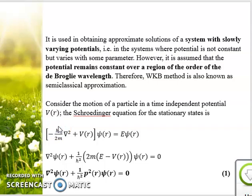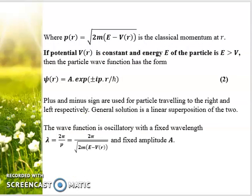We consider the motion of a particle in a time-independent potential V(r). The Schrödinger equation for the stationary state will be: minus ℏ² ∇²/(2m) + V(r) operating on ψ(r) equals E ψ(r). We solve it to the next stage: ∇² ψ(r) + (1/ℏ²)(2m(E - V(r))) ψ(r) = 0. We take the bracket term as p²(r), where p is the classical momentum at position r, given by √(2m(E - V(r))).